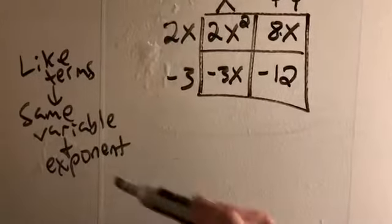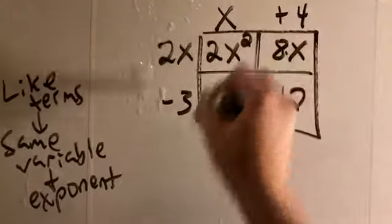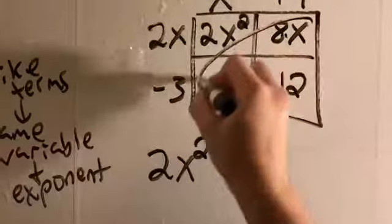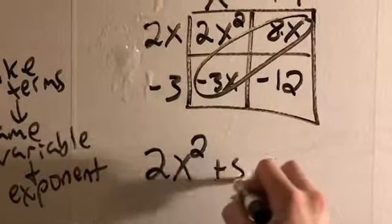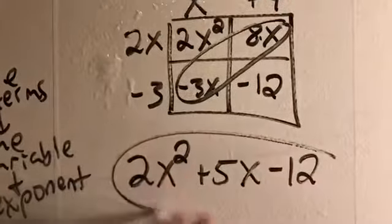Now once again I need to combine my like terms where we have to have the same variable and exponent. I only see one x squared item. 8x minus 3x gives us 5x, and I only see one regular number. We get to the same answer when we just did the double rainbow.